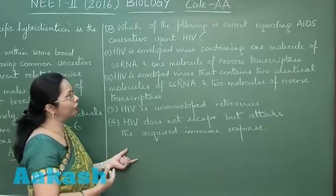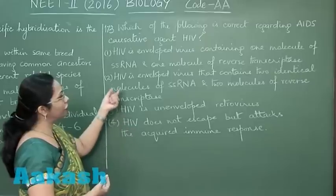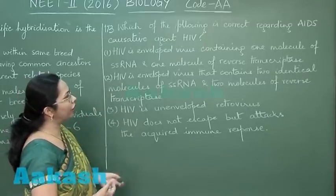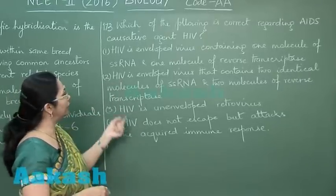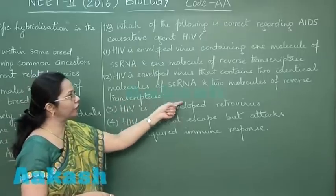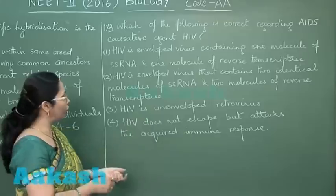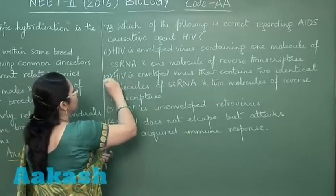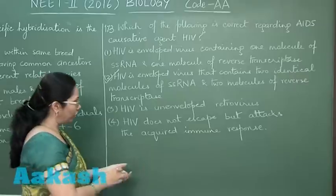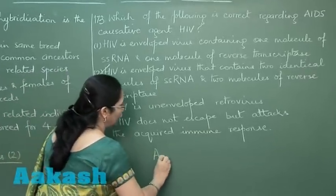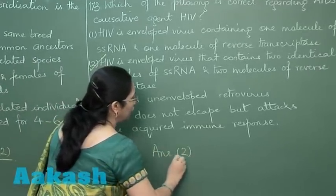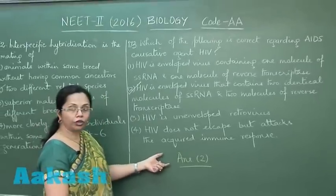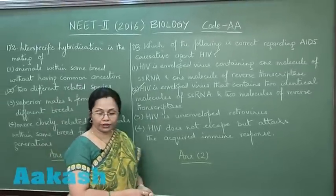The reverse transcriptase will be utilized to form DNA from the viral RNA. Looking at the choices, option two states that HIV is an enveloped virus that contains two identical molecules of single-stranded RNA and two molecules of reverse transcriptase — this is the correct statement. So the answer to question 173 is option two, and we move on to question 174.